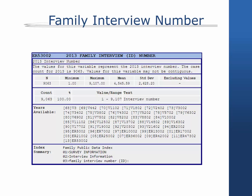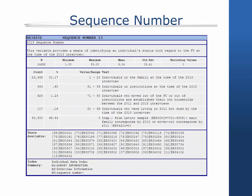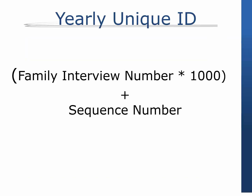The family interview ID number is assigned each year to families in the order in which they are interviewed for the core PSID in that wave. A sequence number is assigned to each person in a family in the order that they are listed on the family roster. To identify an individual in a specific year, you would use the family interview ID number in combination with the sequence number. If you prefer to create a single ID for merging, you can multiply the family interview ID number by 1000 and then add the sequence number for a specific year.